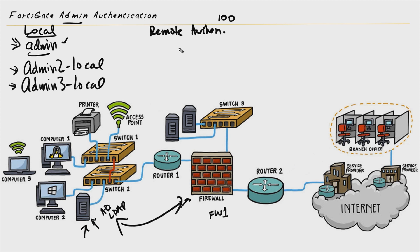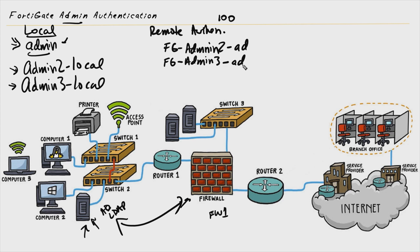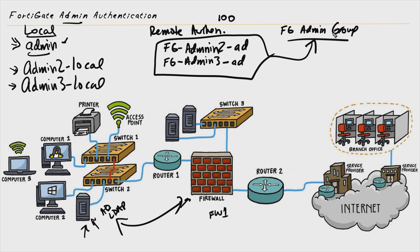We could create users such as fg-admin2-ad and fg-admin3-ad over in Active Directory, accessible via LDAP. That way, when we see those names, we'll know exactly where they reside. We could also create a group — let's call it fg-admin-group — and include the administrators as members of that group.